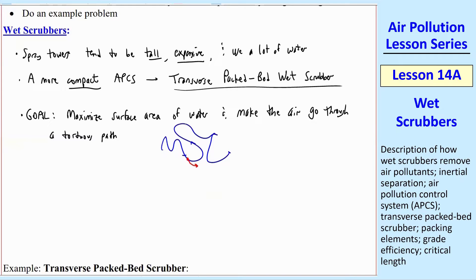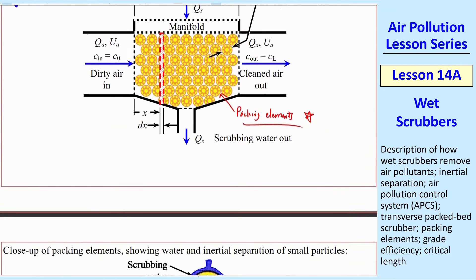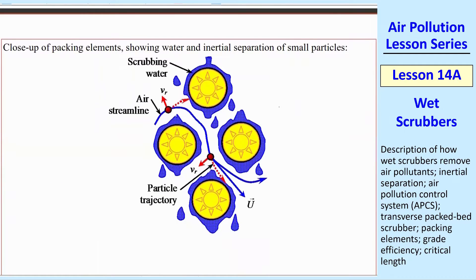You want the air to be doing all kinds of turning because this device works by inertial separation. Every time the air goes around a curve, you have inertial separation of the particles. Let's take a closer look at these packing elements.